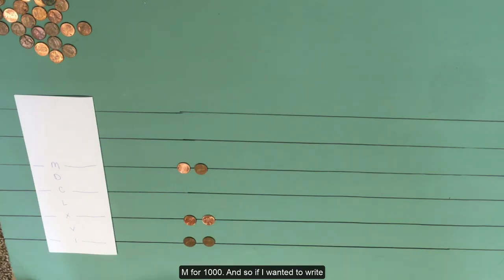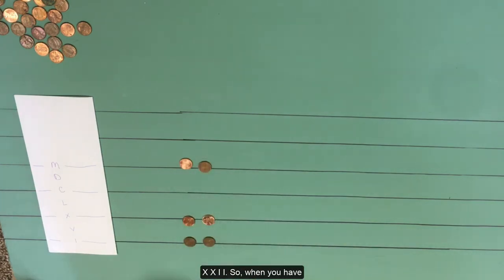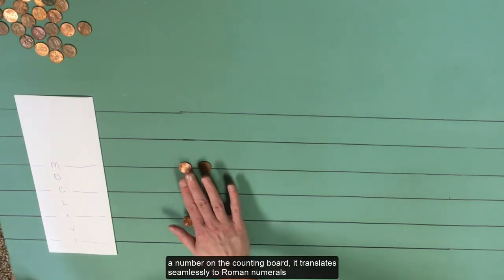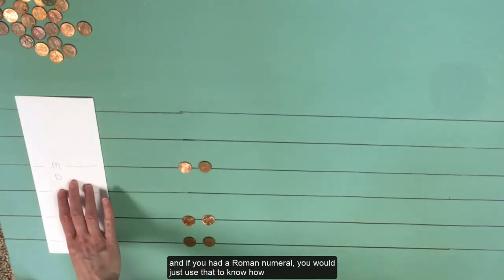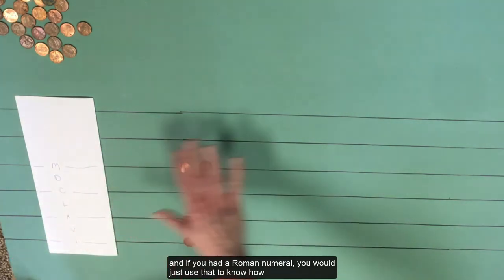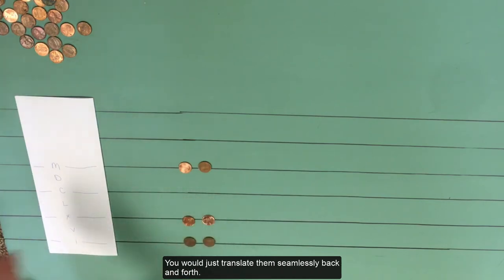And so if I wanted to write this number in Roman numerals, it would be MMXXII. So when you have a number on a counting board, it translates seamlessly to Roman numerals. And if you have a Roman numeral, you would just use that to know how many pennies to put on each line or each space. You would just translate them seamlessly back and forth.